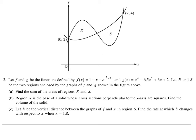If we look at this problem, the first thing you need is a graphing calculator since it's problem number two. The question states you have f and g, defined by these two functions, and r and s are the areas bounded by f and g. The first question is find the sum of the areas of r and s.